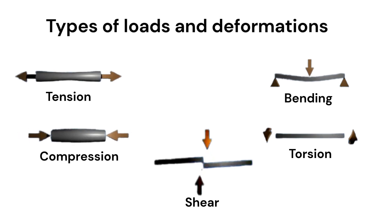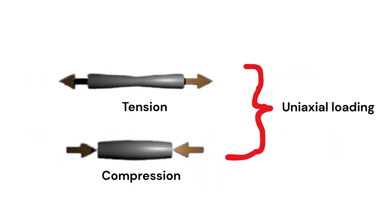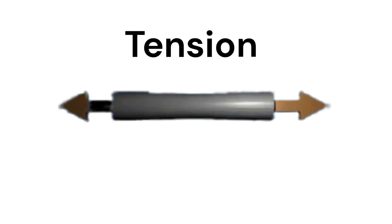In this video we'll look at the basic types of structural loading. We'll start with uniaxial loads. In the first diagram we see tension. Tension occurs when a member is being pulled, meaning the forces act in opposite directions, stretching it and trying to increase its length.